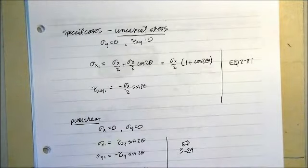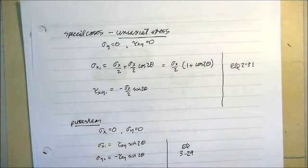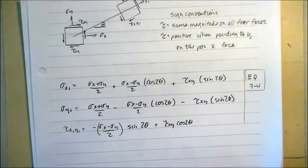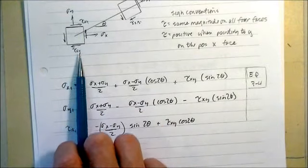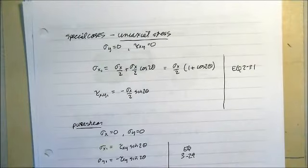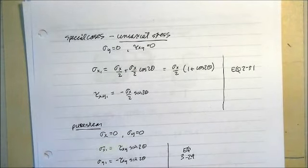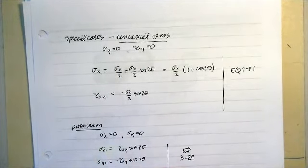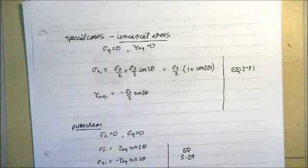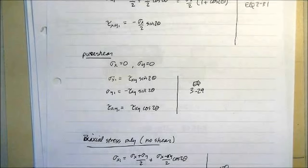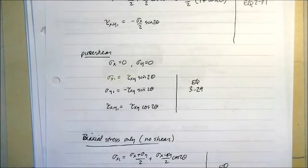Then we talked about some special cases. These are the general stress transformation equations given that the stress element has shear, stress in the x direction, and stress in the y direction. If it's only got stress in the x-direction — meaning sigma-y equals zero and tau-xy equals zero — they reduce to equation 2.31, the same equations we had before. Similarly, if sigma-x and sigma-y both equal zero and the only thing we have is shear stresses, they reduce to equation 3.29, which we had before.